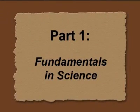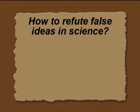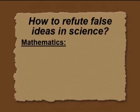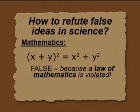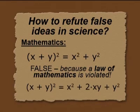Part one: fundamentals in science. How to refute false ideas in science. Let me start with an example in mathematics. You see there is an equation and the equation is false because the law of mathematics is violated. You see the other equation which is right. It is very important in science that we find what is the wrong situation and what is the right situation.